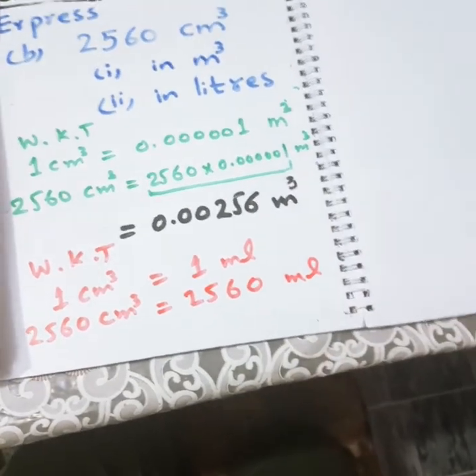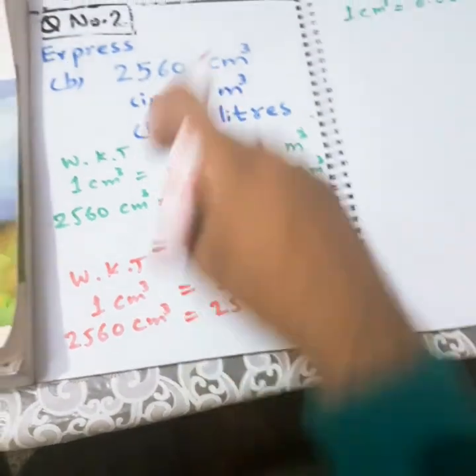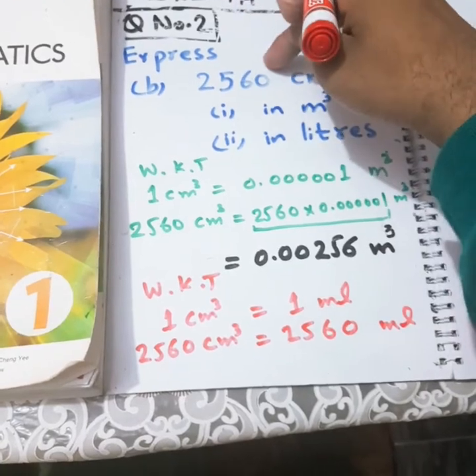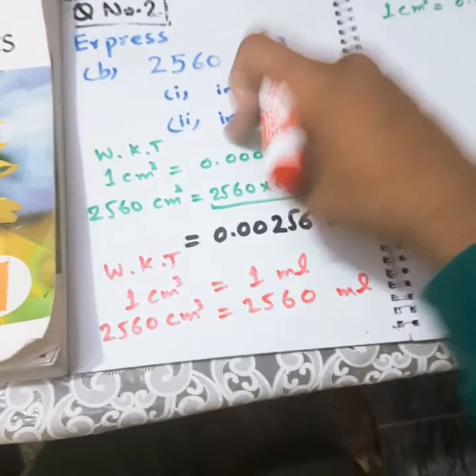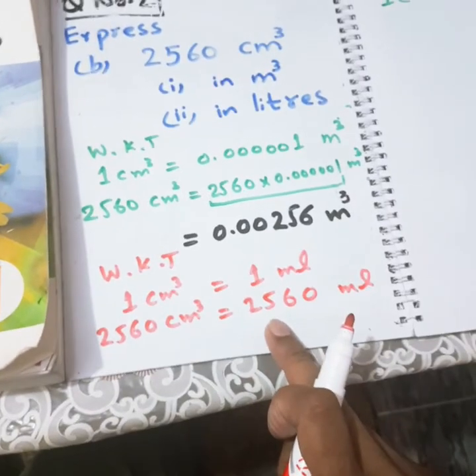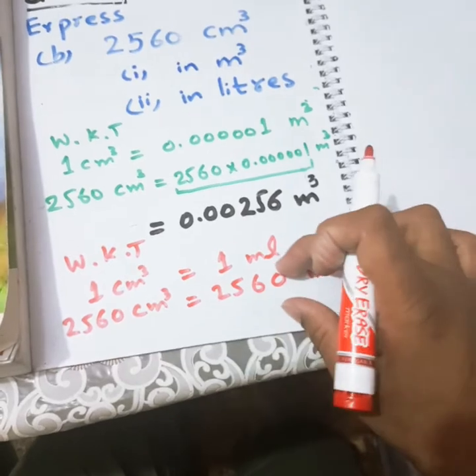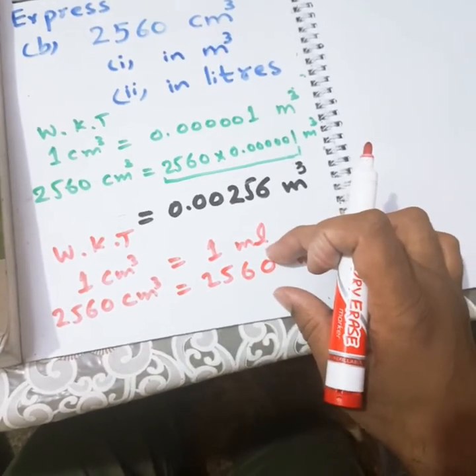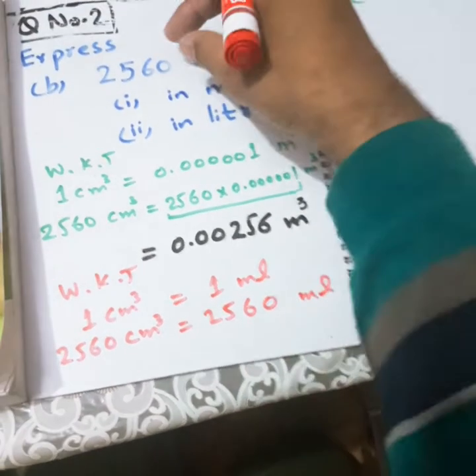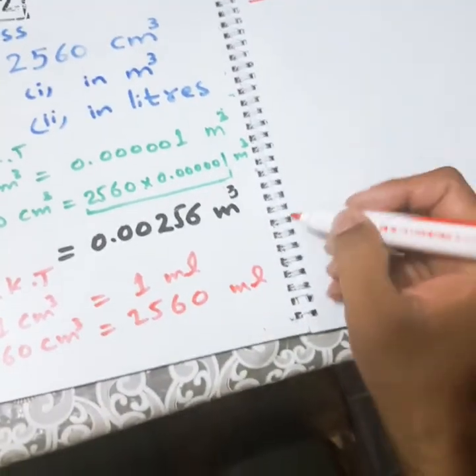So that means we have to convert 2560 mL into liters now. Because we want the answer of 2560 cm³ in liters. And 2560 cm³ is actually 2560 mL. That means finding the answer of 2560 mL into liters is actually the answer of 2560 cm³.